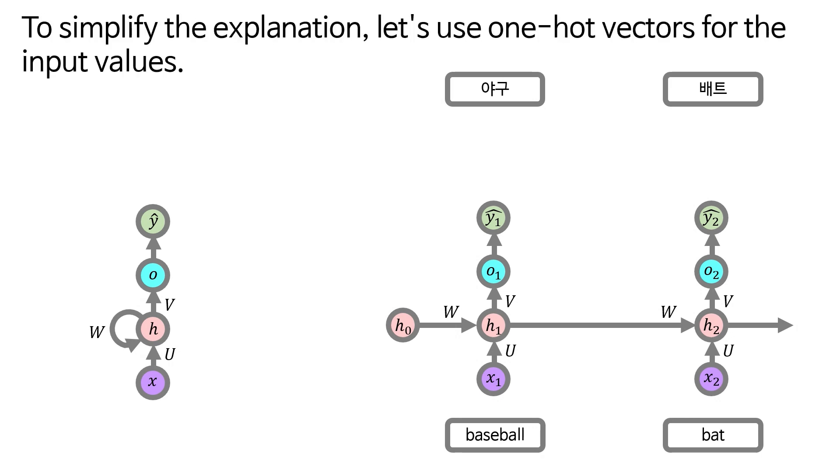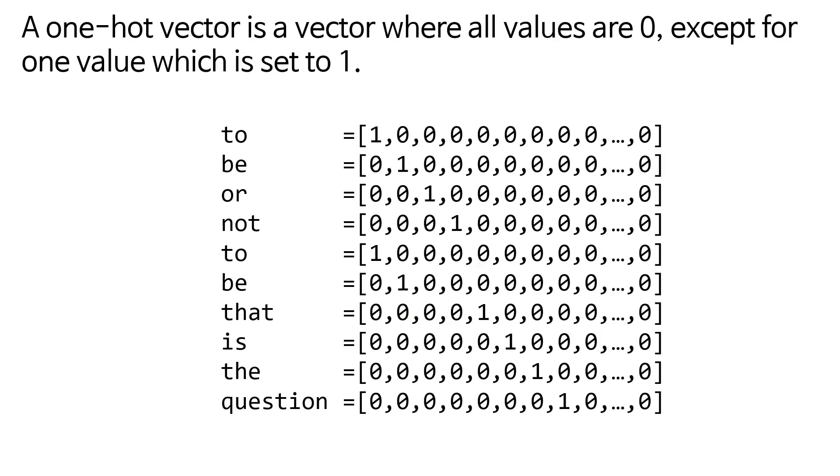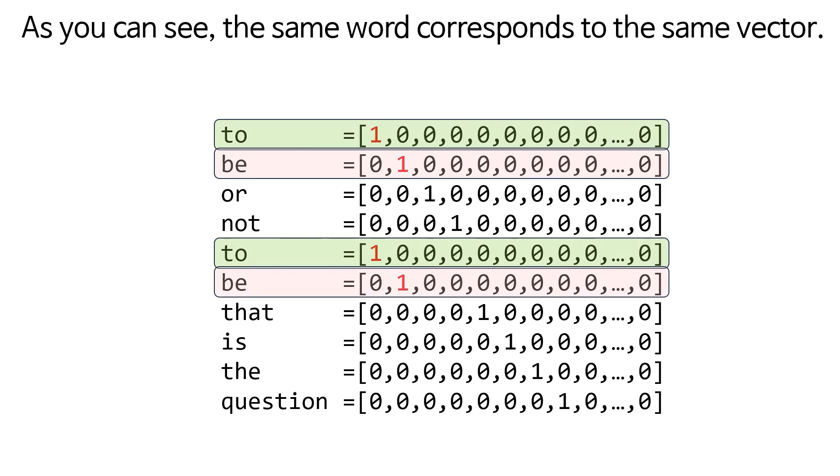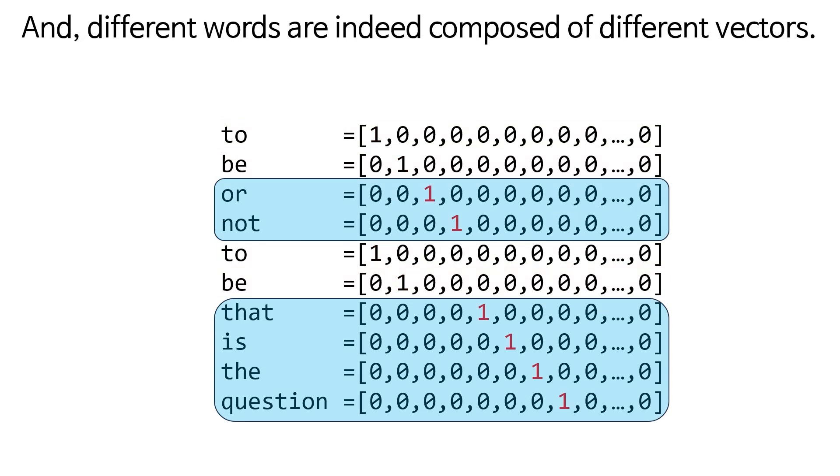To simplify the explanation, let's use one-hot vectors for the input values. A one-hot vector is a vector where all values are zero, except for one value which is set to one. As you can see, the same word corresponds to the same vector, and different words are indeed composed of different vectors.